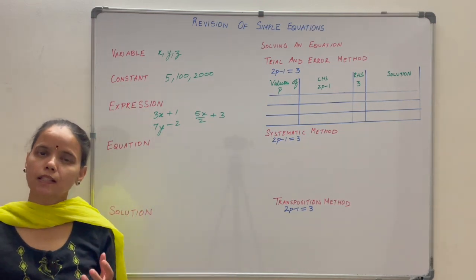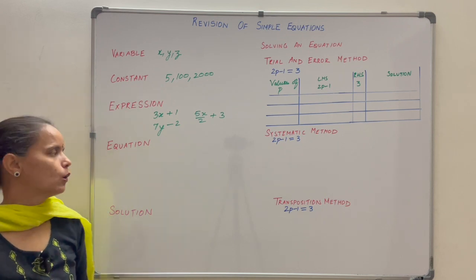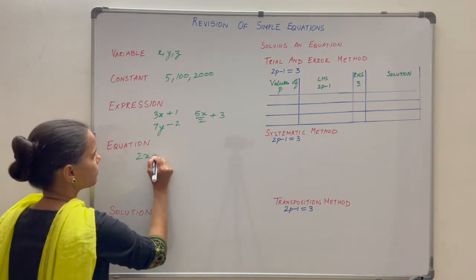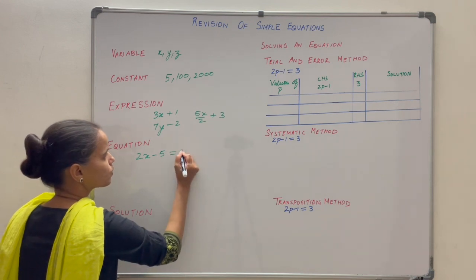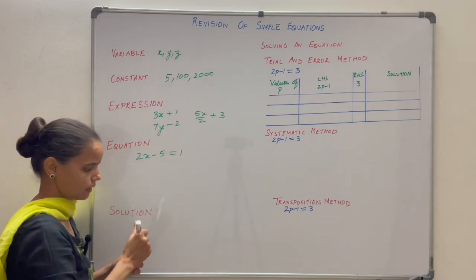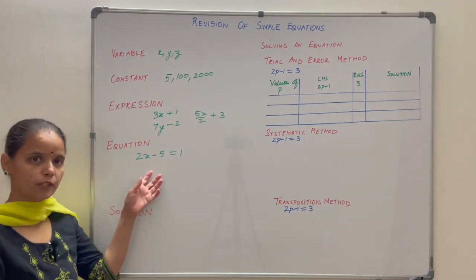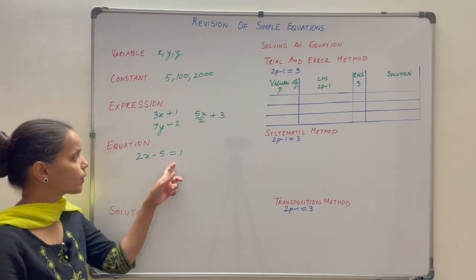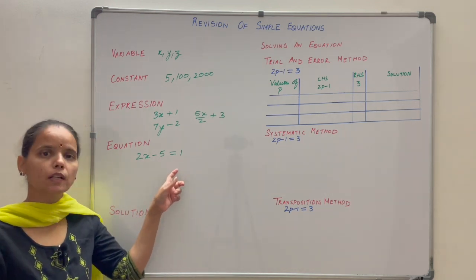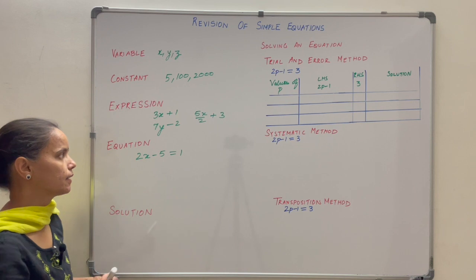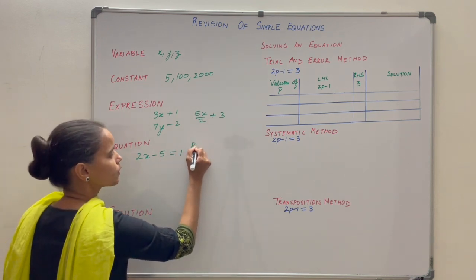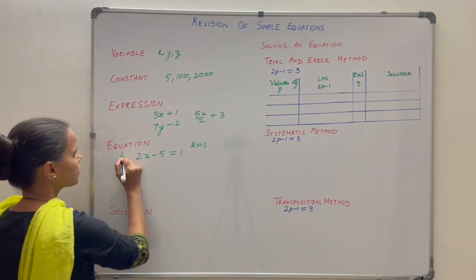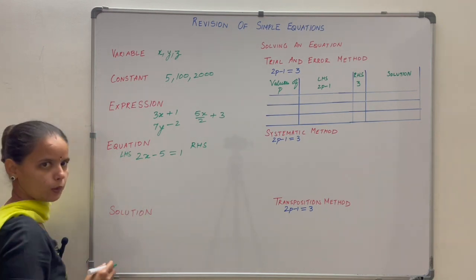Equation — it is a condition on the variable. For example, 2x minus 5 equals to 1 is called an equation. It is a condition on the variable x. An equation has an equals to sign. One side is called the right hand side and the other is the left hand side of the equation.